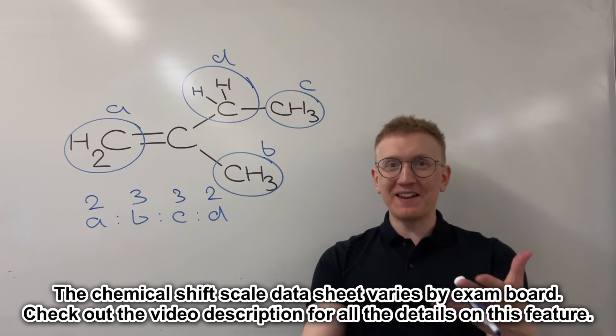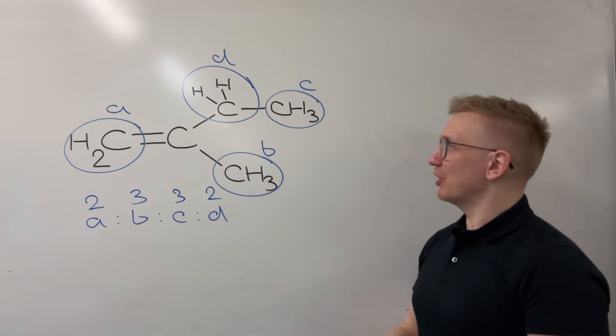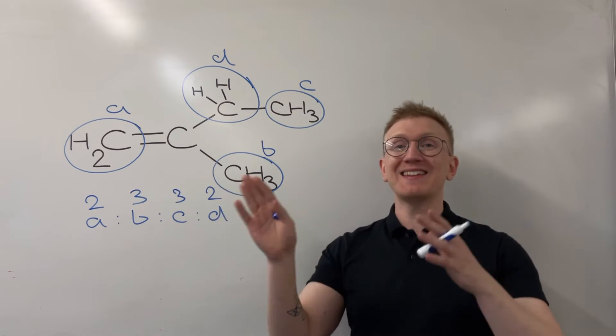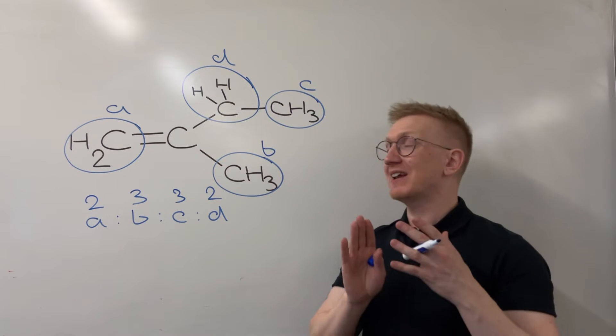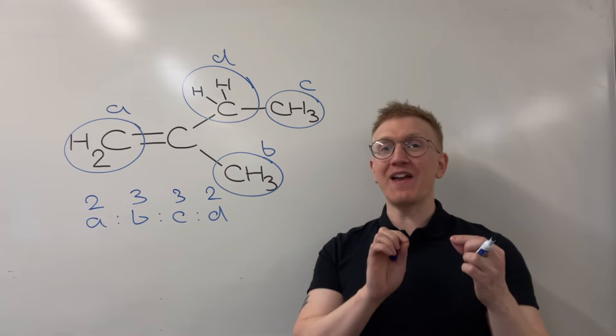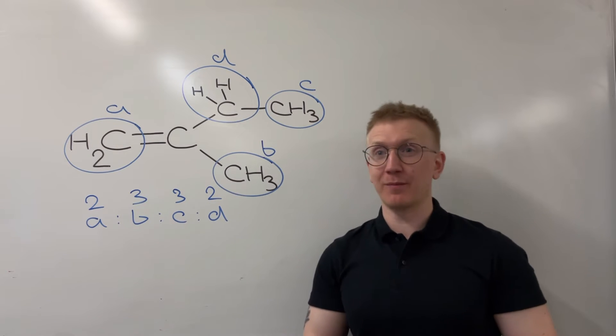So next up then is the splitting pattern. So we're going to go to each peak one at a time. And what we're going to do is we're going to travel to the next carbon up. And we're going to count how many hydrogens there are on that next carbon up. And that's going to give us a value of N. And then I'll show you what we do with that in just a moment.